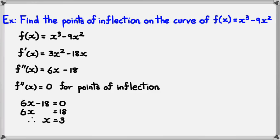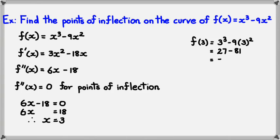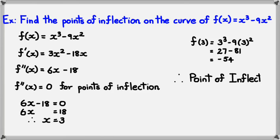Now I need to find the y value of this function. So I'm going to figure out what f(3) is. That's 3³ − 9(3²), which simplifies to −54. So therefore, we can say that on this curve, a point of inflection will be at (3, −54).